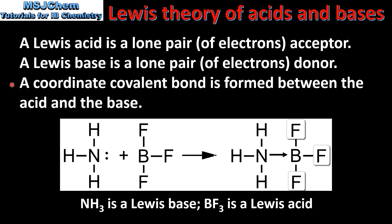A coordinate covalent bond is formed between the acid and the base, which is shown by this arrow here. A coordinate covalent bond is formed when one species provides both the electrons in the bond.